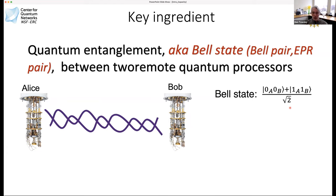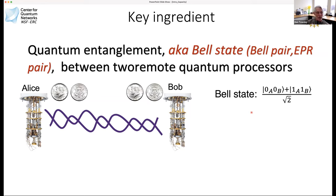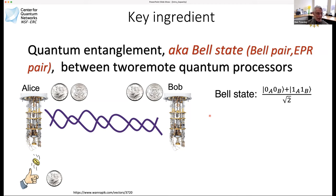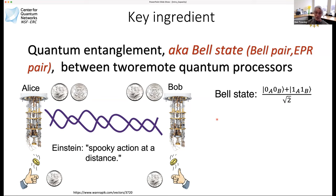Just to remind you in the Bra-ket notation, a Bell state looks like the following: you have two qubits, one belonging to Alice and the other belonging to Bob, in a superposition state. You can think of it as Alice and Bob sharing two coins. The coin can either be heads or tails, and being entangled means that if Alice flips her coin and gets heads, that will result in Bob getting the same result when he flips his coin. Einstein referred to this as spooky action at a distance.